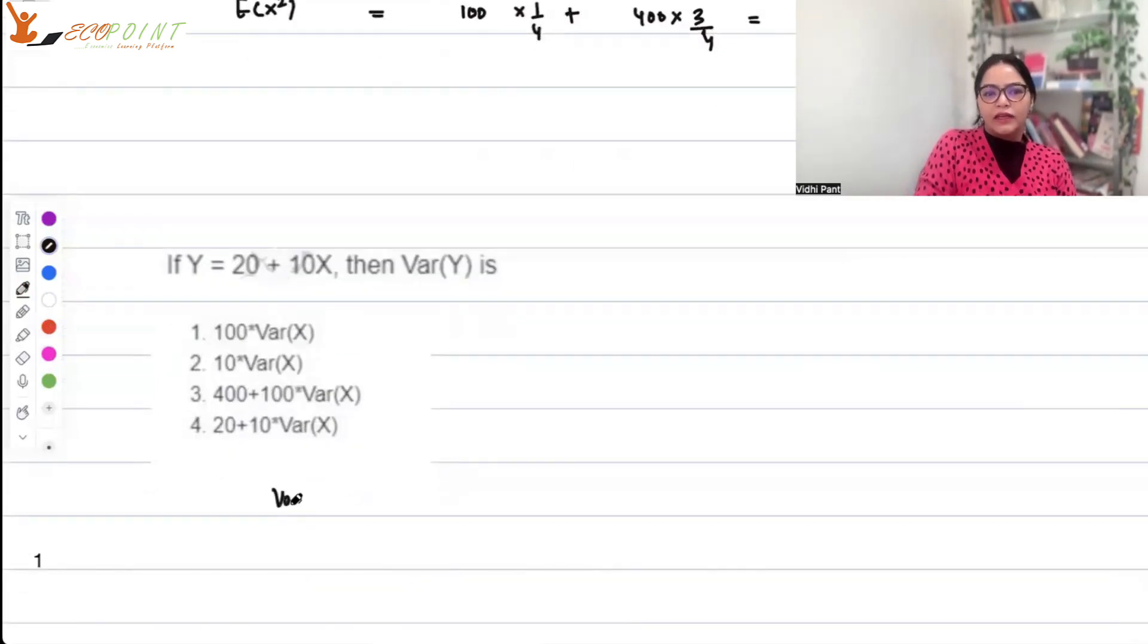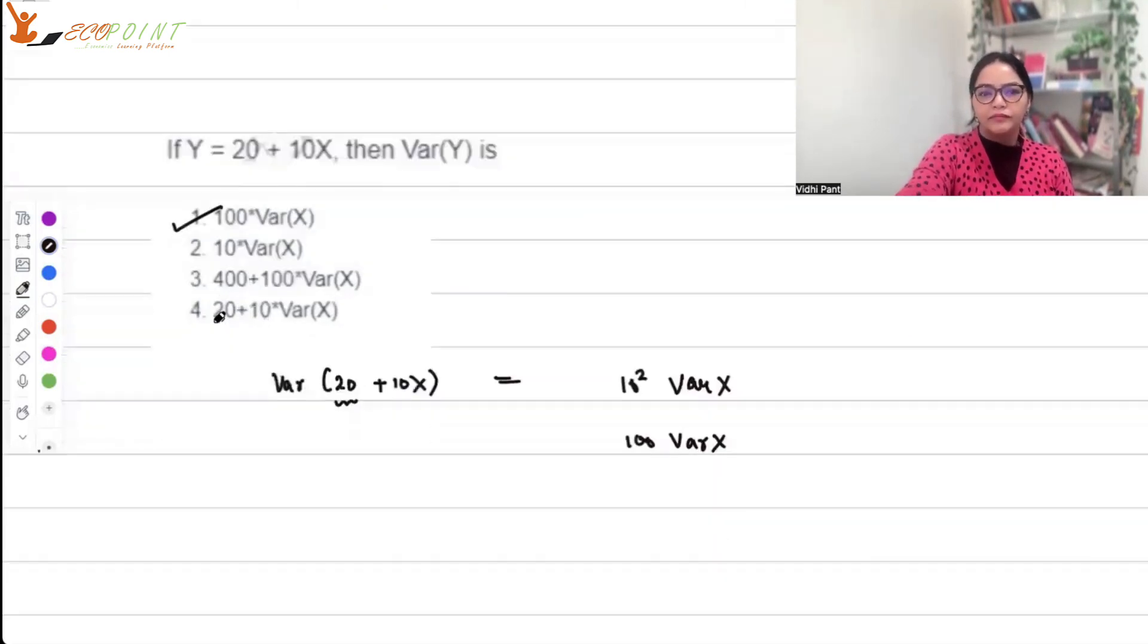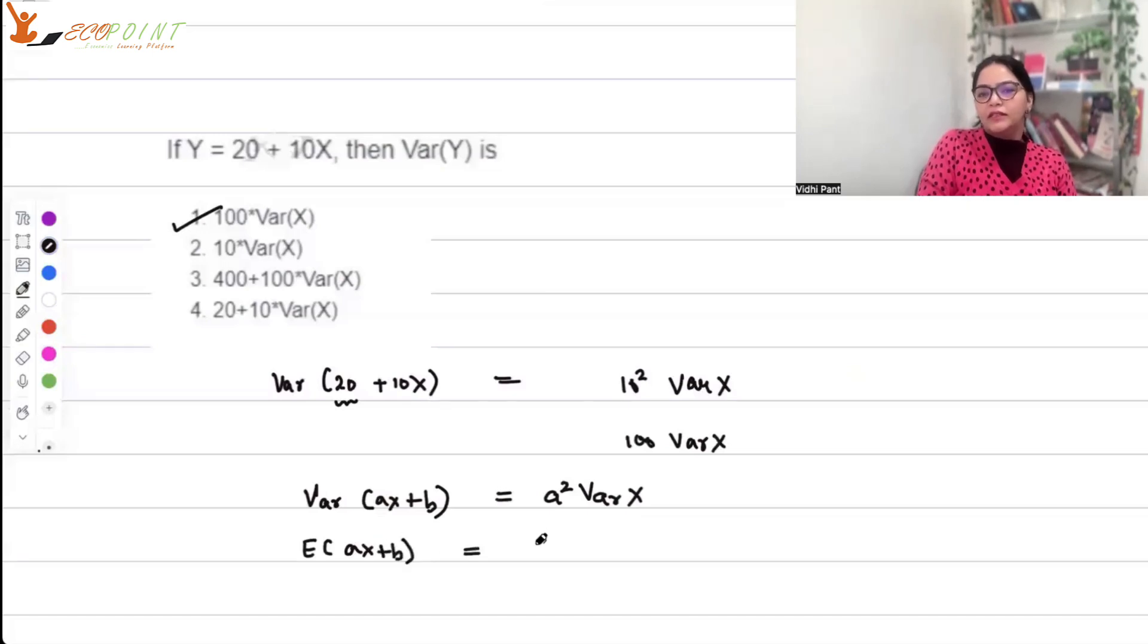Next question: if Y = 20 + 10X, what is variance of Y? Variance of 20 + 10X equals variance of 20, which is 0, since there's nothing associated to a constant. Variance of 10X will be 10² times variance of X, that is 100 times variance of X, which is option 1. Remember: variance(aX + b) = a² × variance(X), while E(aX + b) = a × E(X) + b.